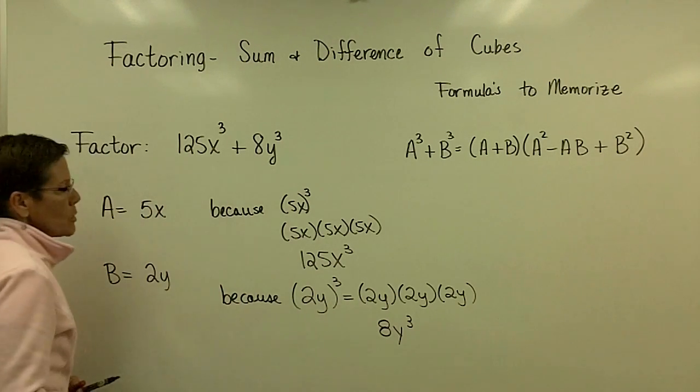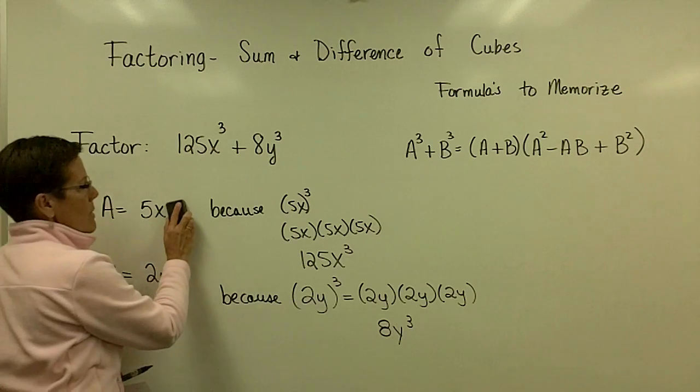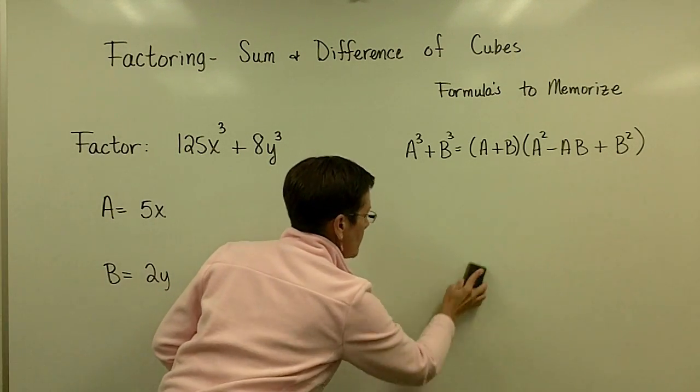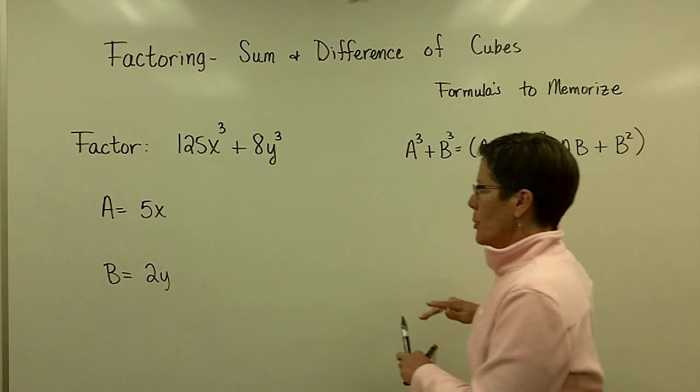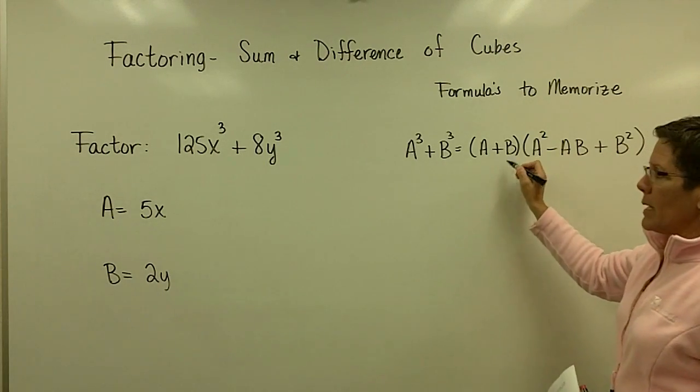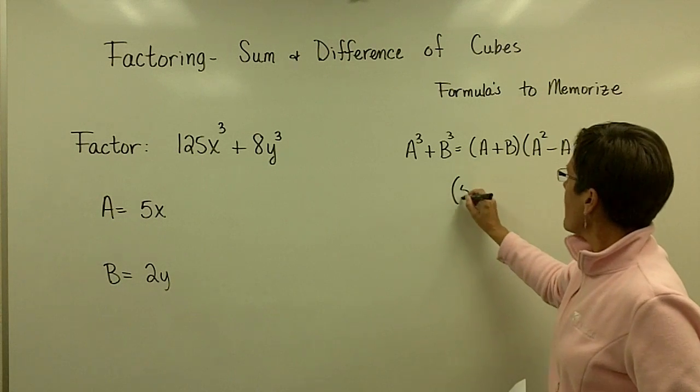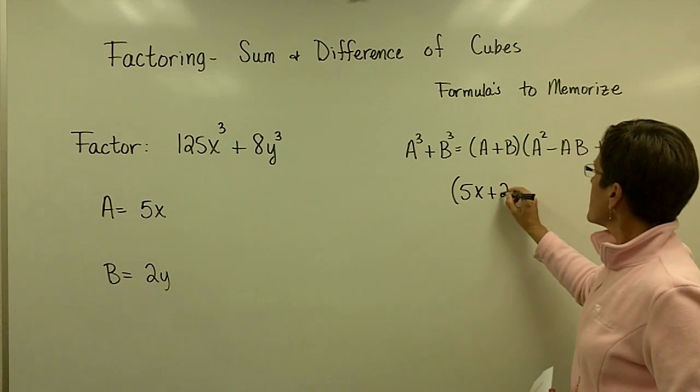I'm going to erase this because I want to have a little bit more space, but I've got my A and my B value. There is one other thing that can cause folks some problem. So now I'm going to go ahead and put in for A and for B the 5x and the 2y. So right here, I'll have 5x plus the 2y.